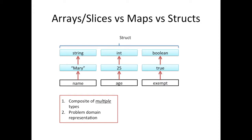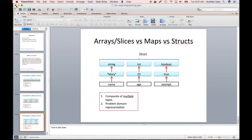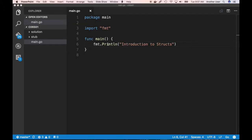A struct is a composite of multiple types. When it comes to problem domain representation — that is, when you write more and more complex programs and want to represent things like people, cars, or hotels — it's much better to describe those entities by having several fields or properties. Being able to define a struct allows you to do that. An advantage here is that for the very first time we're seeing how we can come up with our own data type, because after defining it we can reuse it just like any other data type. Let's go look at the code.